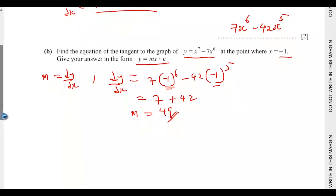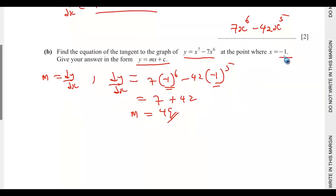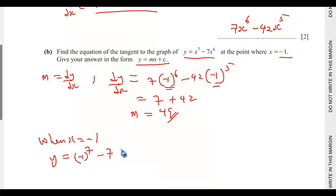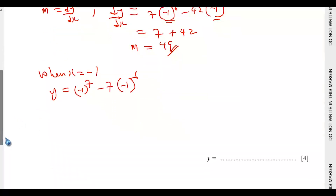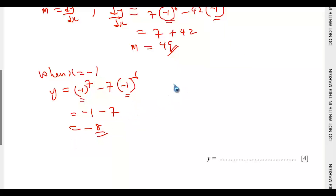We need to find the value of y when x equals negative 1. So when x equals negative 1, y will be equal to x to the power of 7, that is negative 1 to the power of 7, minus 7 into negative 1 to the power of 6. This will be negative 1, and positive 1 times negative 7 will be negative 7. So the value of y will be negative 8. That means the equation passes through the point x equals negative 1, y equals negative 8.